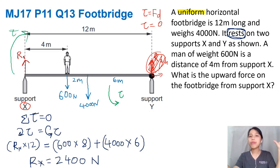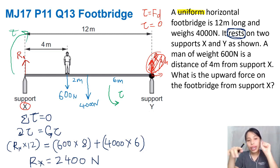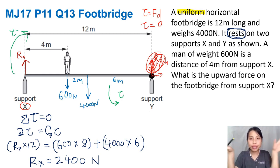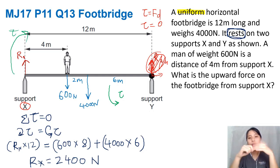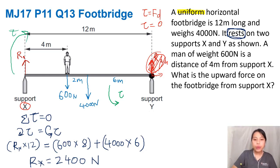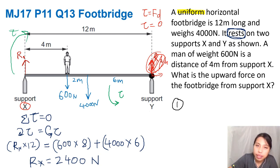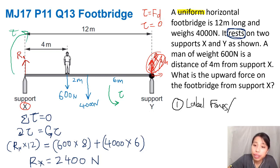The answer is 2400 newtons. For this uniform rod to be at rest, support X must have an upward reaction force of 2400 newtons to support both the man's weight and the weight of the footbridge. To recap: whenever you see torque-related problems, if there's a picture, label your forces. If there's no picture, you need to draw your own diagram.